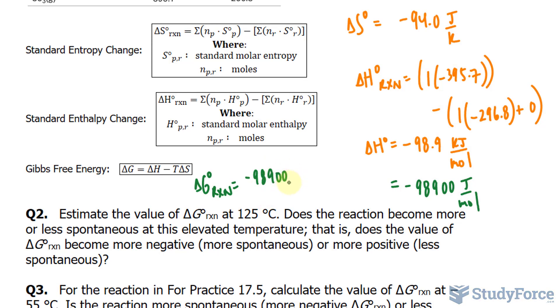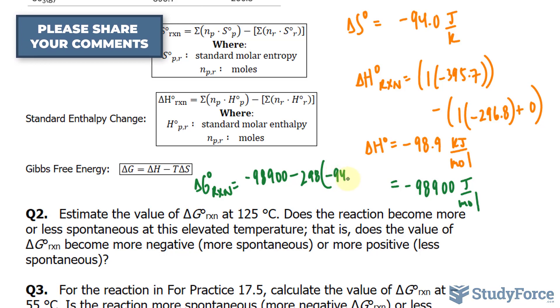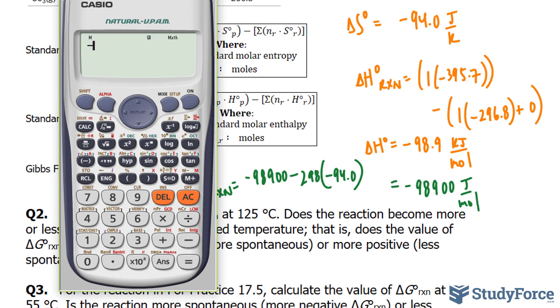Minus 298 times the number we found earlier, negative 94.0. Let's use our calculator: negative 98,900 minus 298 times negative 94.0. And our delta G happens to be negative, so it'll be spontaneous.